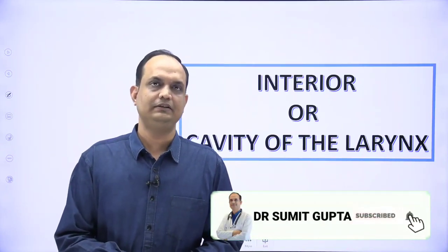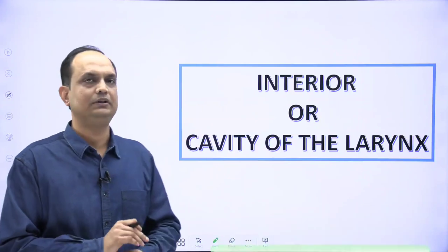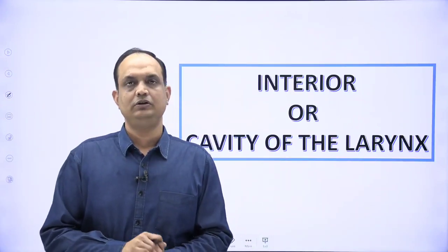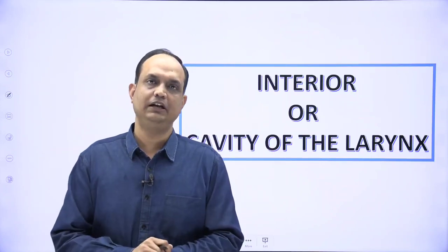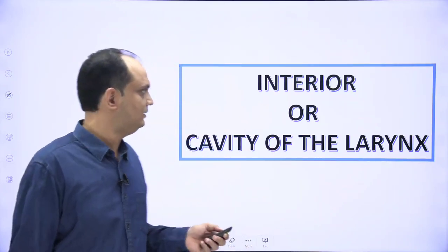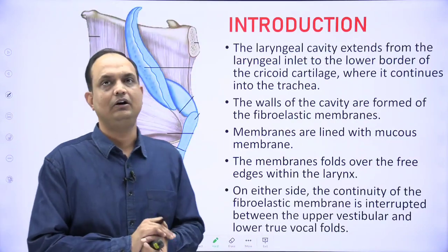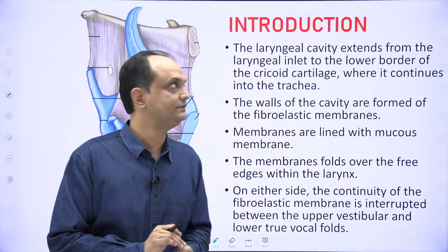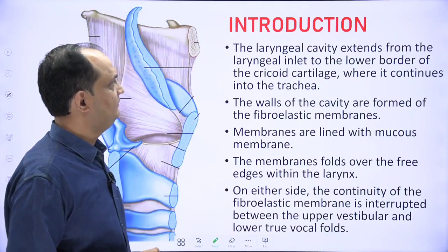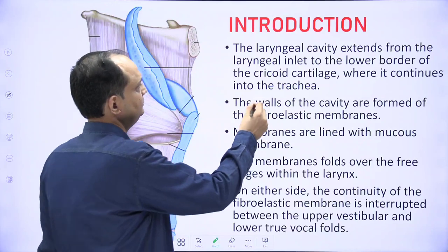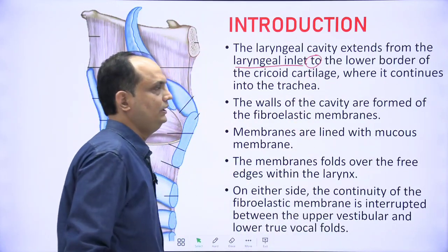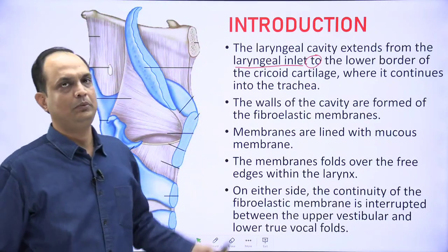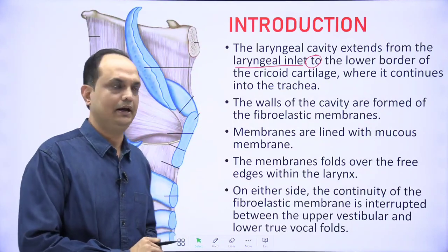Hello students. In continuation of the larynx, today we will discuss the interior of the larynx. You may have the question: describe the cavity of the larynx. The laryngeal cavity extends from the laryngeal inlet to the lower border of the cricoid cartilage, and at the lower border it continues with the trachea.